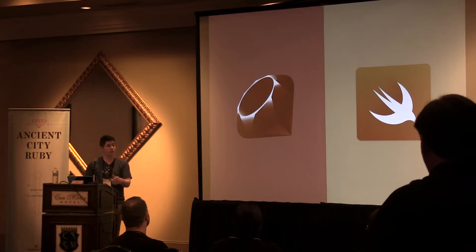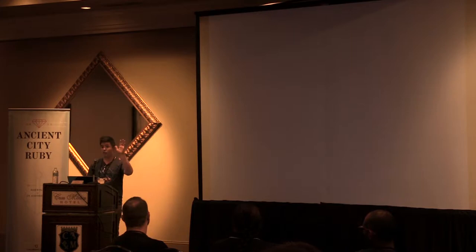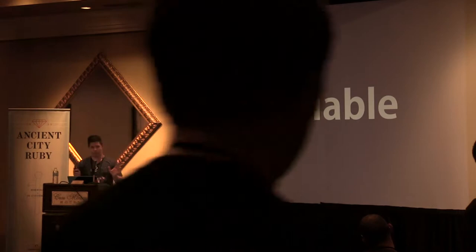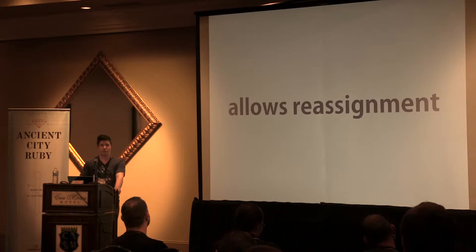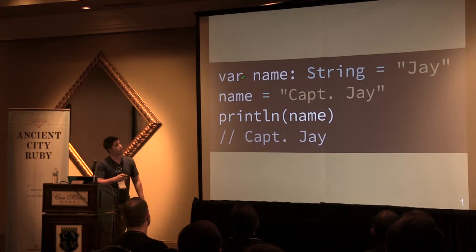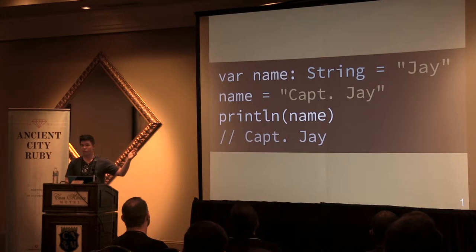First, we need to lay some groundwork. The variable — one of the most basic parts of any language. A variable is an identifier that allows reassignment. In Swift, you declare a variable with the var keyword followed by an identifier. In this case, we specify the type as a string and initialize it to a literal string. Later you can change the value, and if we print that variable afterwards, you can see it prints the new value.